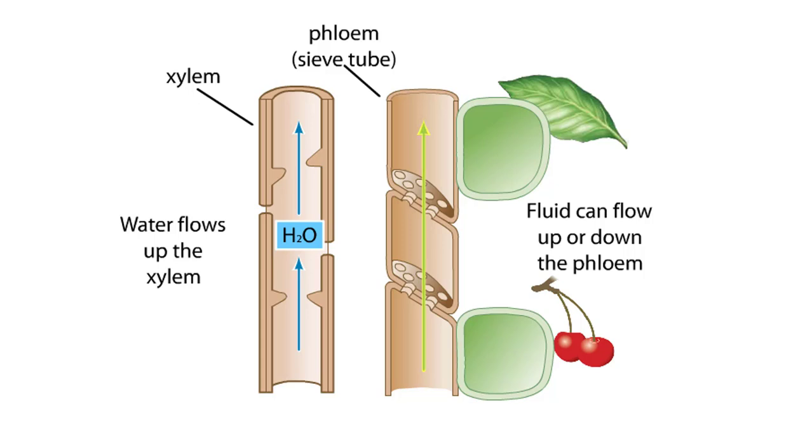Unlike in the xylem, the solution in the phloem can flow up or down the plant. The direction depends on the concentration of solutes in the phloem. A model, called the pressure flow model, describes how sucrose concentrations determine the direction of the flow.